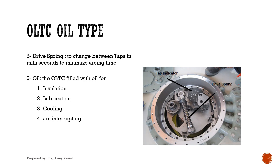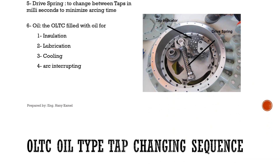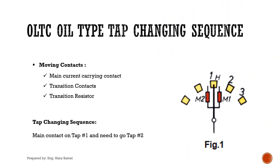Oil is used in the OLTC for: insulation medium; lubrication for the moving parts inside the tap changer compartment; cooling for the tap changer; and arc interruption facility during tap changing. Moving contacts include: main current carrying contacts; two transition contacts, which help in the make-before-break sequence; and a transition resistor, which limits the short circuit current during shorting of taps in the tap changing sequence.